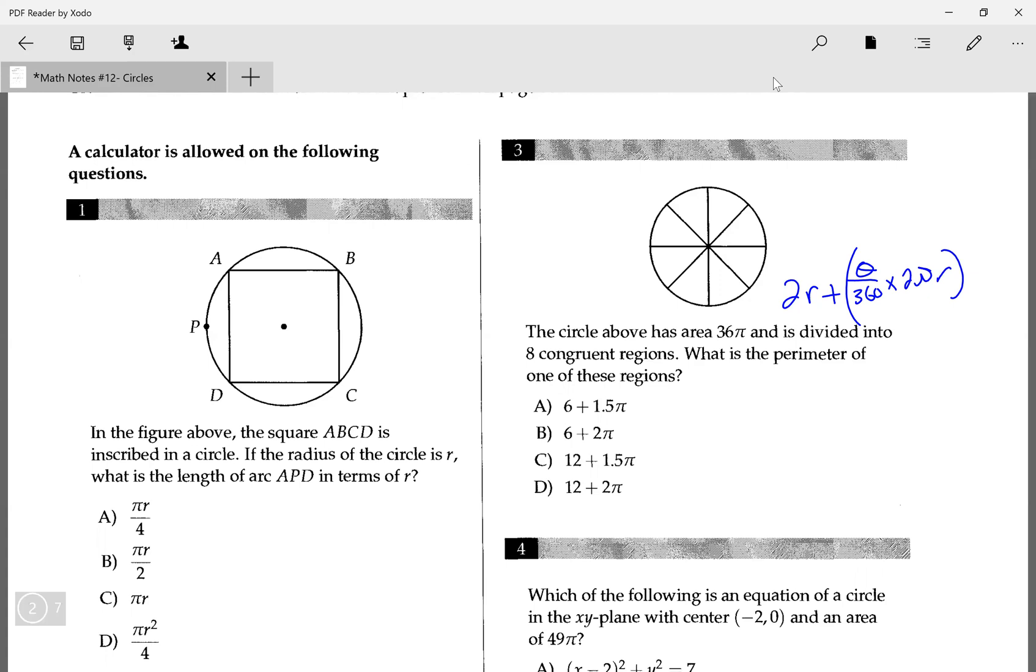So now let's plug in all the information I have. The area is 36π. So if the area is 36π, and area equals πr². Area equals πr² and that equals 36π. Then that means radius is equal to the square root of 36, which is 6. So we know r is 6.